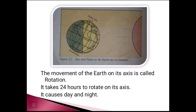The movement of the earth on its axis is called rotation, and it takes about 24 hours for the earth to complete one rotation. The direction of rotation is west to east. Rotation of the earth causes day and night. Rotation also causes tides in the oceans. Wind and ocean currents also change direction because of the rotation of the earth.